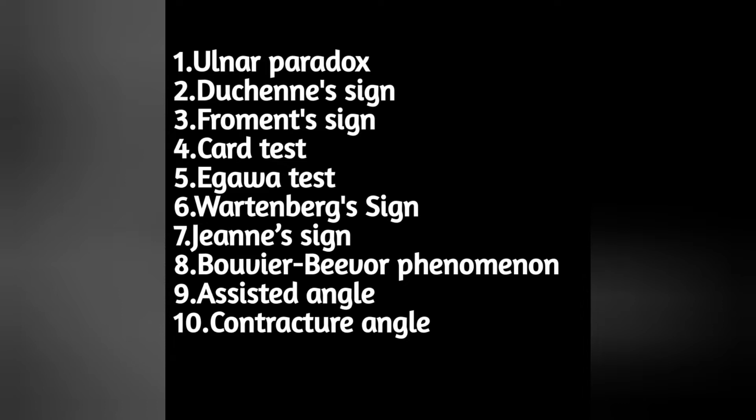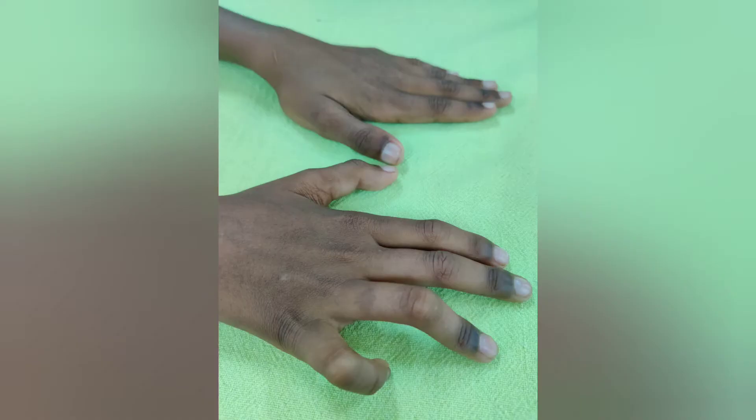To differentiate between high and low ulnar nerve palsy, first we have to test flexor carpi ulnaris and flexor digitorum profundus of the ring and little finger. If these tendons are spared, then it is a low ulnar nerve palsy.